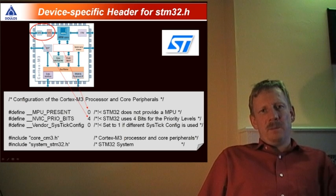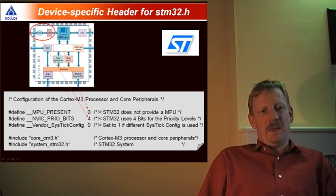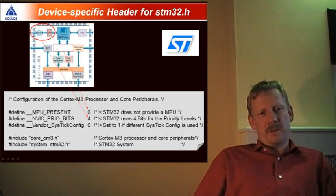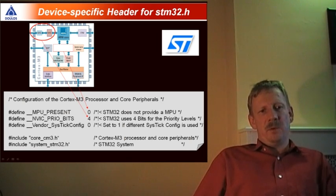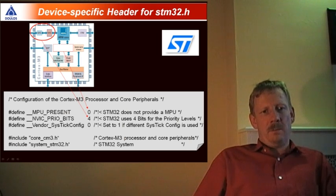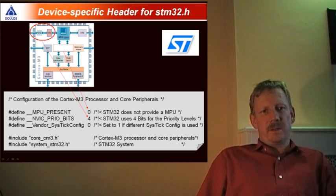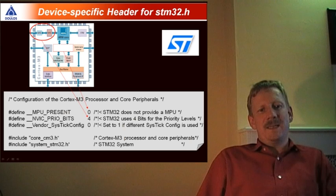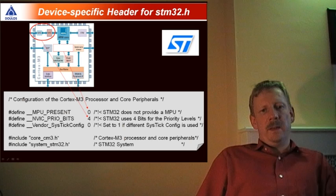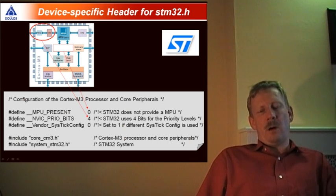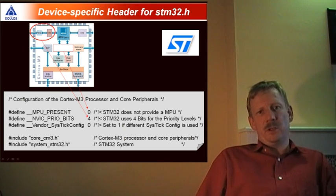Here is another example from an STM32 implementation. This file holds information such as whether this Cortex-M3 is implemented with an MPU, which is an optional feature from ARM, and how many priority bits this core is implemented with. You can easily look into this file and know the implementation options — in this case, how STMicroelectronics has implemented the Cortex-M3 with which optional features.